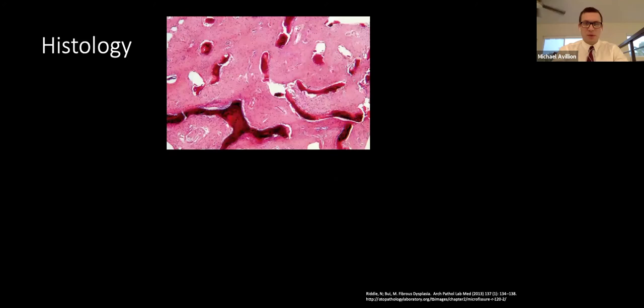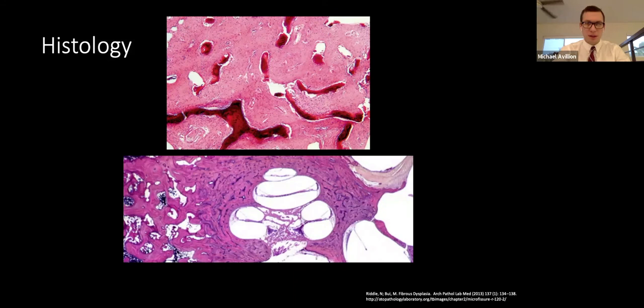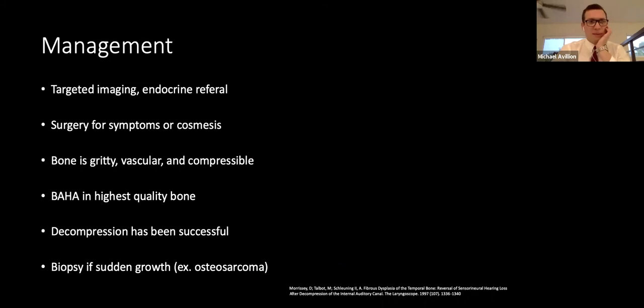On histologic exam, one observes a dense fibrous stroma with a 'Chinese character' architecture without osteoblastic rimming — these are the trabeculae. On the normal slide by comparison, the bony trabeculae adjacent to the cochlea are organized, interconnected, and there is no fibrous stroma, with normal trabecular cavities and no hyperdensity.